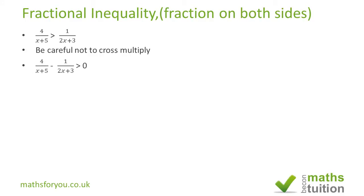So we end up with 4 over x plus 5 minus 1 over 2x plus 3 greater than 0 and our LCD or LCM is going to be the product of (x+5) and (2x+3).